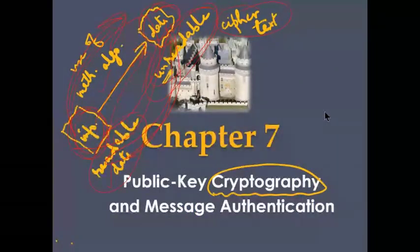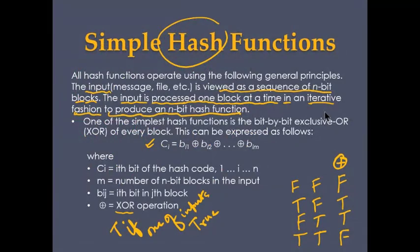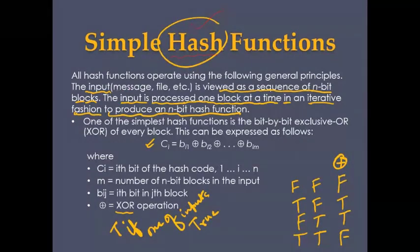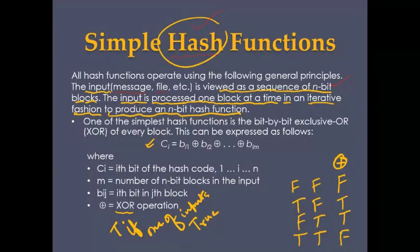We will study public cryptography and message authentication in this chapter. The first topic is the hash function — a mathematical function. In this function, the input, which is a message or file from the user to be encrypted, is viewed as a sequence of n-bit blocks. These n-bit blocks are processed one block at a time in an iterative manner.